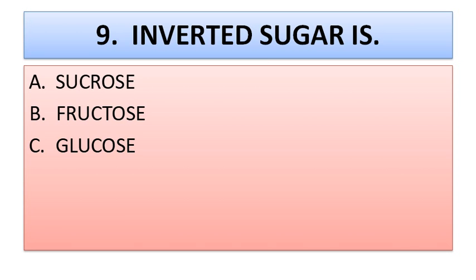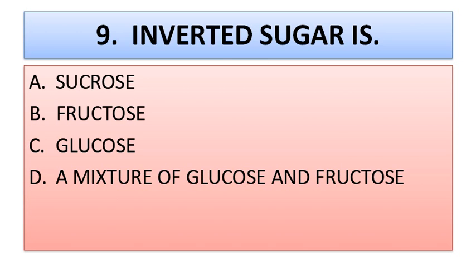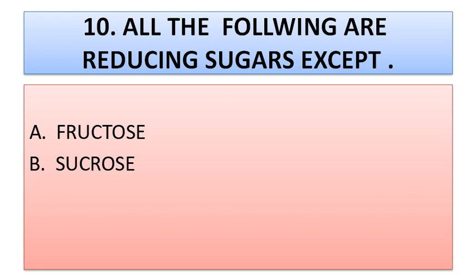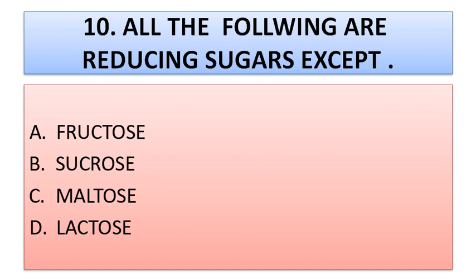Question number nine: inverted sugar is — option A: sucrose, option B: fructose, option C: glucose, option D: a mixture of glucose and fructose. Option D is correct. Question number ten: all of the following are reducing sugars except — option A: fructose, option B: sucrose, option C: maltose, option D: lactose. The correct answer is option B, sucrose.